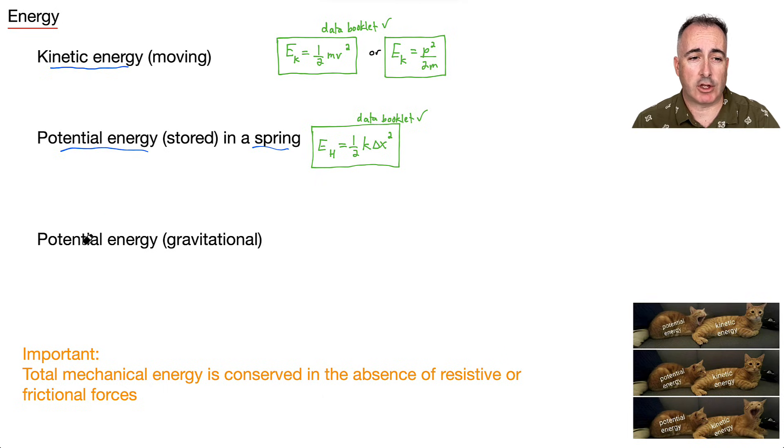Finally, potential energy, your stored energy due to gravity. This comes from lifting up an object. Normally people know it as E equals mgh, but on your data booklet it goes delta EP equals m times g times delta H.